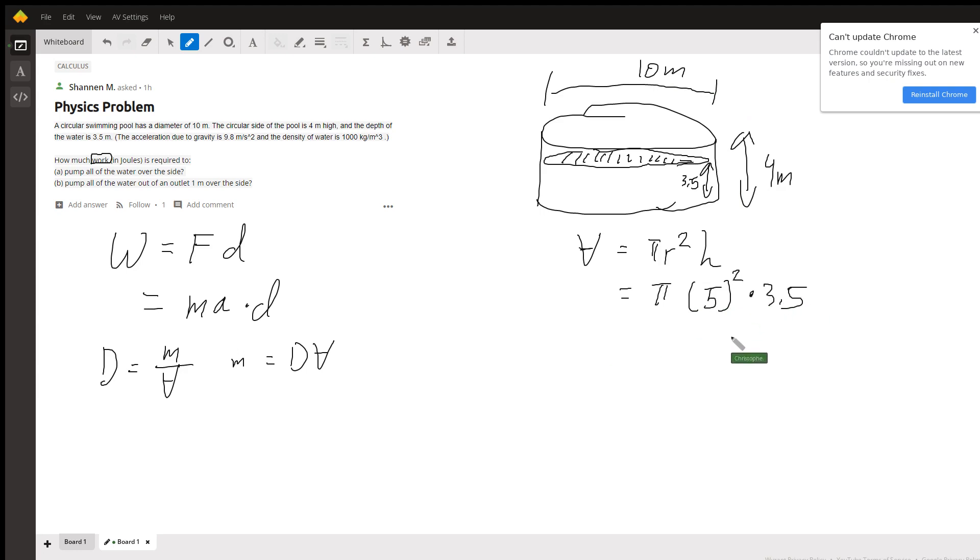I'll do all the calculations at the very end, just when you're concerned about getting all of the numbers put down. So once we know our volume, we're given our acceleration of 9.8, and we're given our density of 1,000 kilograms per meter cubed.